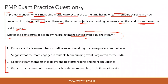Option A — encourage team members to define ways of working to ensure professional cohesion — is a good option, demonstrating servant leadership by enabling team members to define their own ways of working. Let's hold this. Option B — suggest the team engages in multiple team building events organized by the PMO — is incorrect, as it is a very passive way of developing a team.